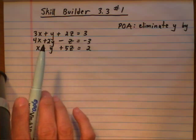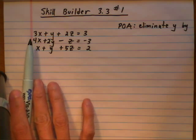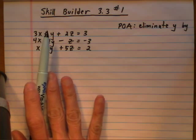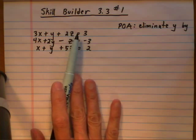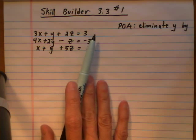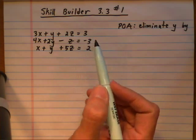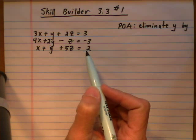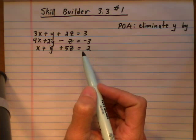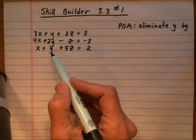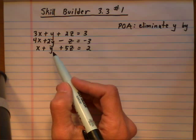The first thing you want to do is make sure the system is lined up so that you have the x terms, the y terms, the z terms equal the constant terms. From there, we're going to collapse this into a 2×2 system by eliminating one of the variables. It doesn't matter which one you eliminate — pick whatever one is easy to work with.